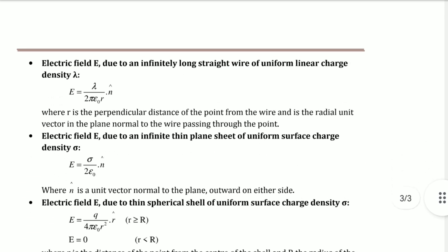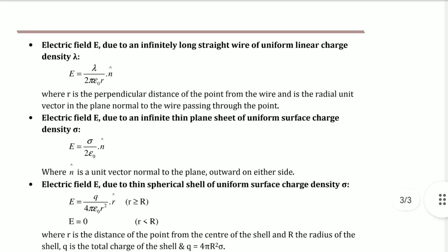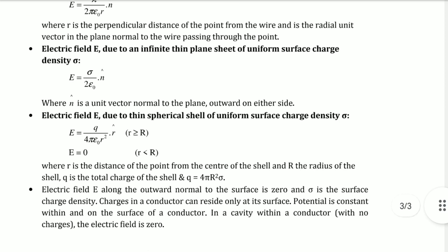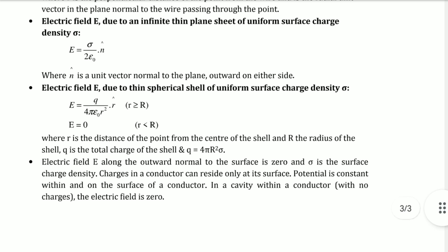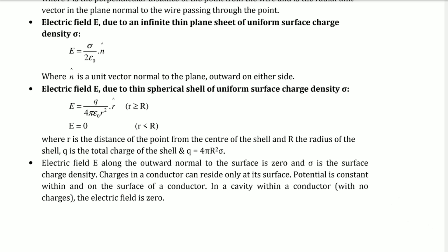Electric field due to an infinitely long straight wire of uniform linear charge density λ: E = λ/(2πε₀r)·n̂, where r is perpendicular distance from the wire and n̂ is radial unit vector. Electric field due to infinite thin plate of uniform surface charge density σ: E = σ/(2ε₀)·n̂, where n̂ is unit vector normal to the plane.